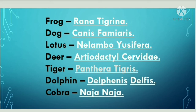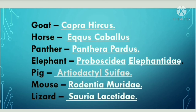Scientific name of deer is Artiodactyla cervidae. Scientific name of tiger is Panthera tigris. Scientific name of dolphin is Delphinus delphis. Scientific name of cobra is Naja naja. Scientific name of goat is Capra hircus. Scientific name of horse is Equus caballus. Scientific name of panther is Panthera pardus. Scientific name of elephant is Proboscidea elephantidae.